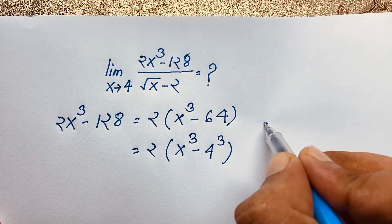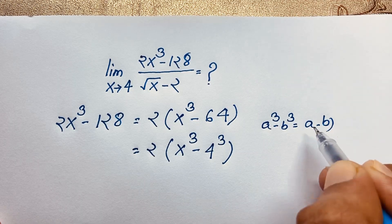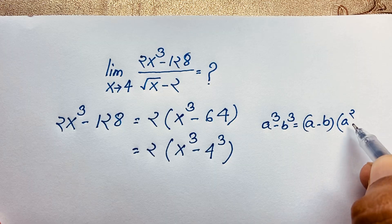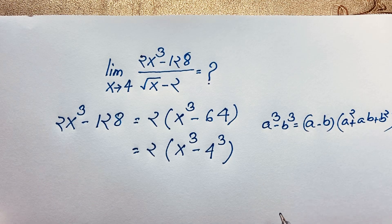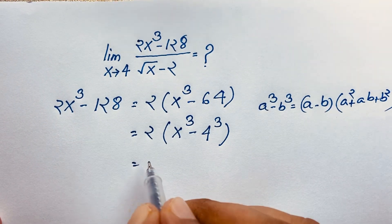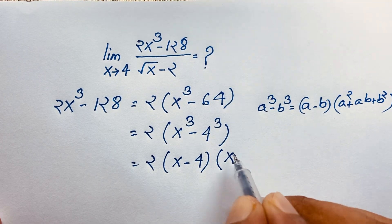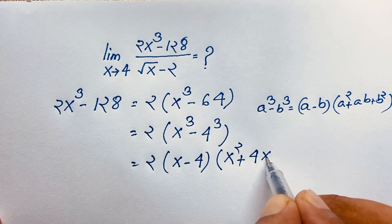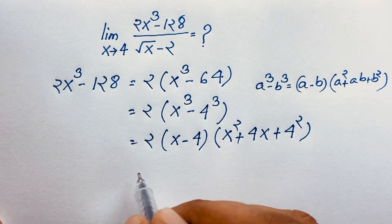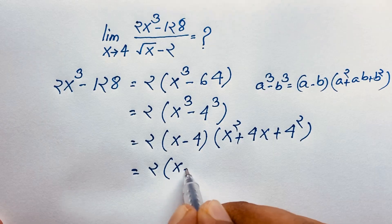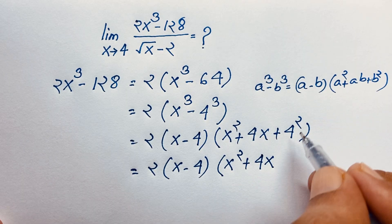Now I apply the a³ - b³ formula. So this expression becomes 2 times (x - 4), where b is 4, times (x² + 4x + b²). That is x² + 4x + 16.